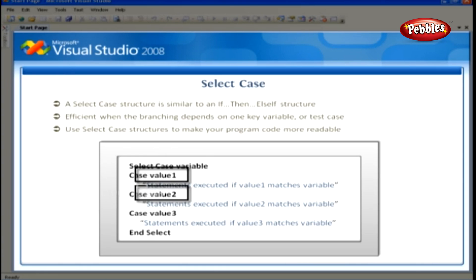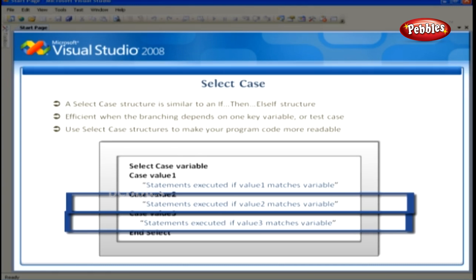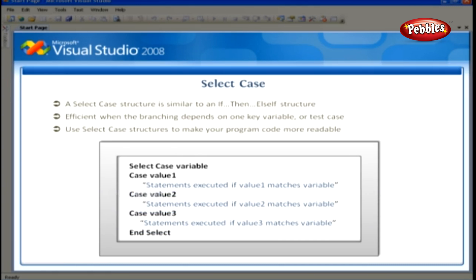value2, and value3 with numbers, strings, or other values related to the test case being considered. If one of the values matches the variable, the statements below the case clause are executed, and then Visual Basic jumps to the line after the End Select statement and picks up execution there.